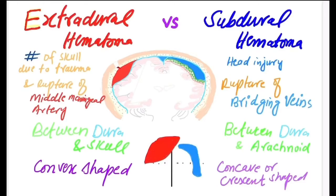Extradural hematoma: 'extra' means above, 'dura' means dura mater, 'hematoma' means collection of blood. So extradural hematoma is the clot or collection of blood above the dura mater. Subdural hematoma means collection of blood below the dura mater. This is the dura mater.